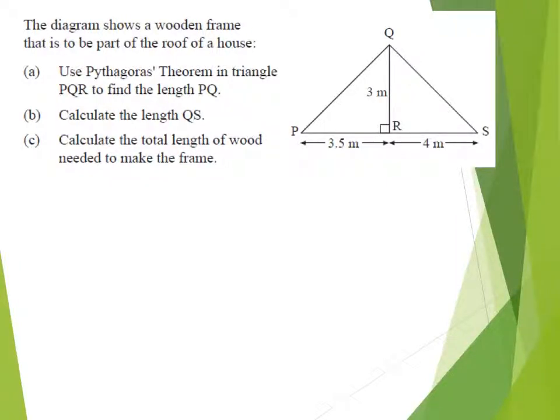We've got a wooden frame that's part of the roof of the house. We are asked to find lots of different things. First off, we've got to find the length PQ, so that is here. Then we've got to find QS, which is from Q to S here. And then we've got to get the total length of wood to make the frame, so that's going to be all of these sides added together.